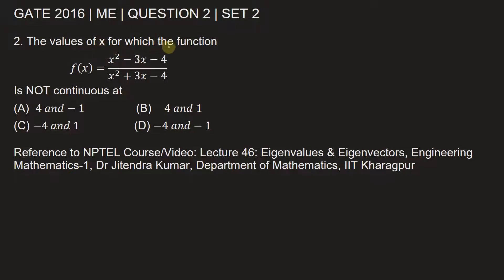The value of x for which the function f(x) is equal to x square minus 3x minus 4 by x square plus 3x minus 4 is not continuous.